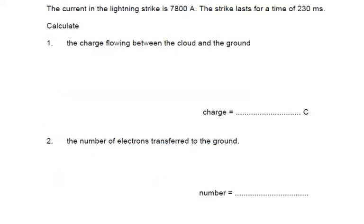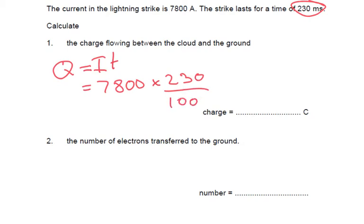The current in a lightning strike is 7800 amps. The strike lasts for a time of 230 milliseconds. So we need to do a conversion there. Calculate the charge flowing between the cloud and the ground. So Q equals IT. So we've got 7800 times by 230 over 1000 to convert it into seconds.